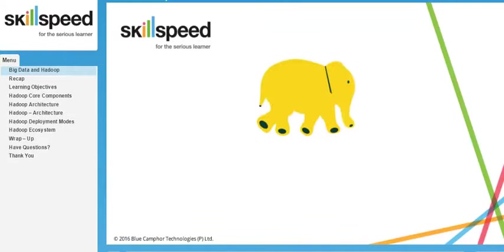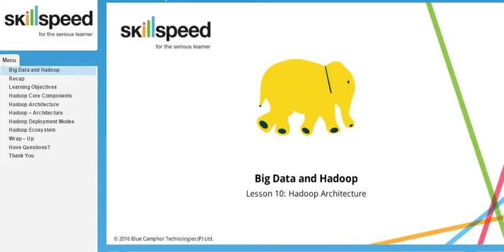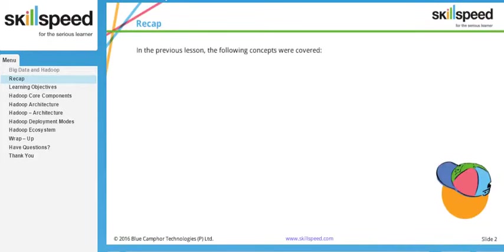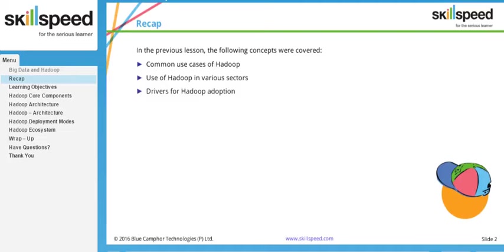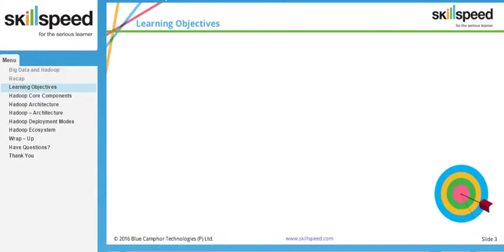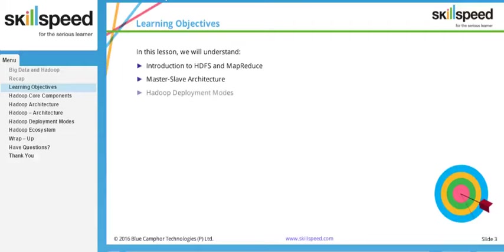In this last lesson, lesson number 10 of module 1 of the Big Data Hadoop Administration course, we'll be talking about the Hadoop architecture in detail. In the previous lesson, we learned some major drivers for Hadoop adoption among various sectors of the market. In this session, we'll be focusing on HDFS and MapReduce, master-slave architecture, the different Hadoop deployment modes, and a quick look at the Hadoop ecosystem.